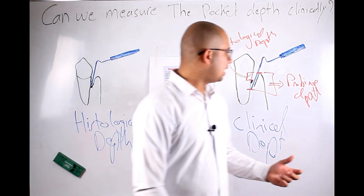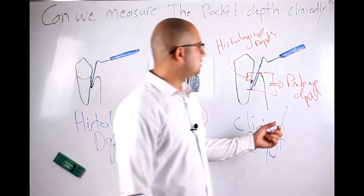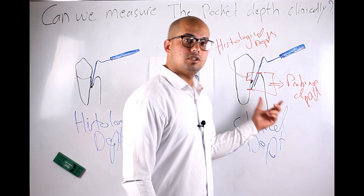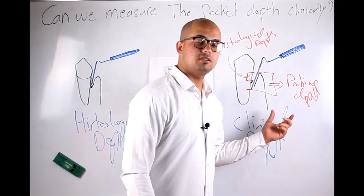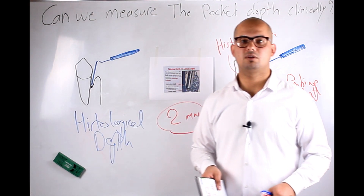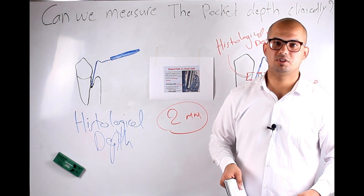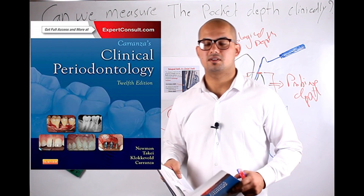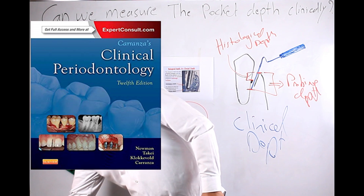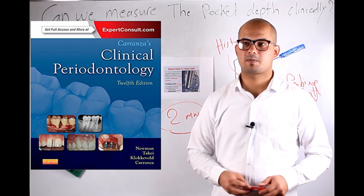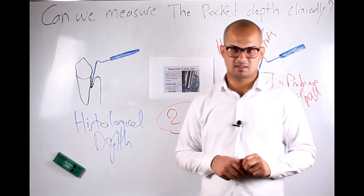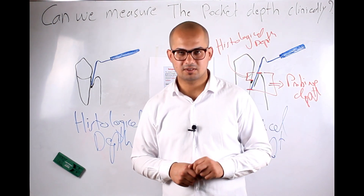Probing depth is the distance from the gum margin to the point where the probe penetrates into the pocket. If you need more information regarding this topic, I recommend a book that contains a lot of data on histological and probing depth. If you have any questions, just write them down and I will be pleased to answer them. Thank you for watching.